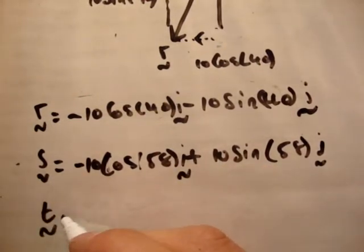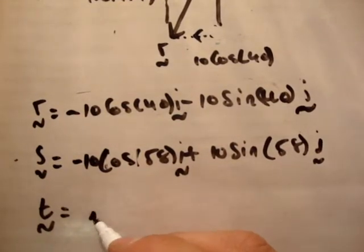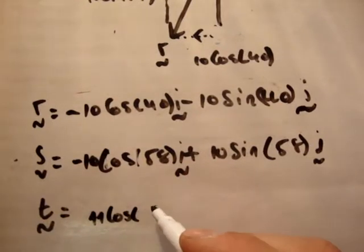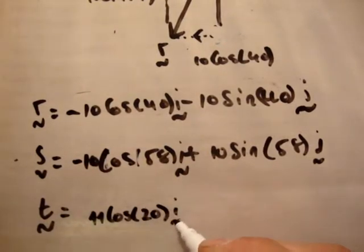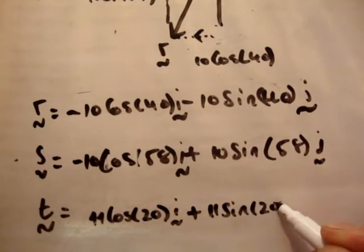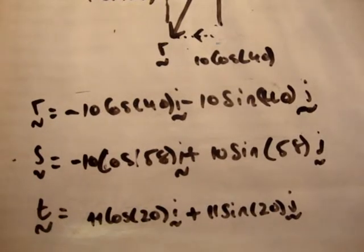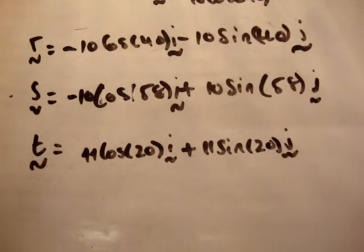And finally, the vector t is equal to plus and plus in terms of the quadrant. So it's 11 cosine of 20 i hat plus 11 times the sine of 20 j hat. Now in order to add s plus r plus t, well you add all the ones that are facing in the i hat direction and you add all the ones that are facing in the j hat direction. Now I don't really have the space to do it, so I'm going to do it slowly if I can.